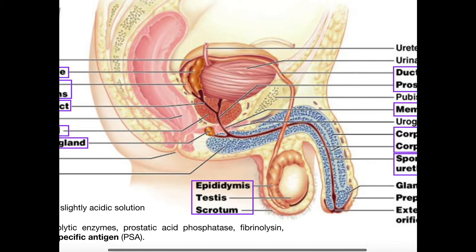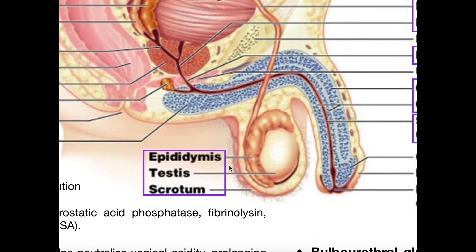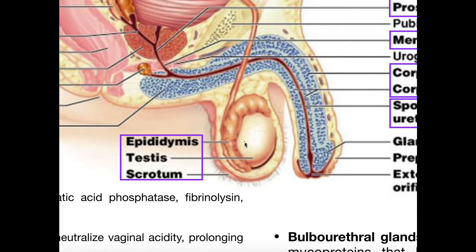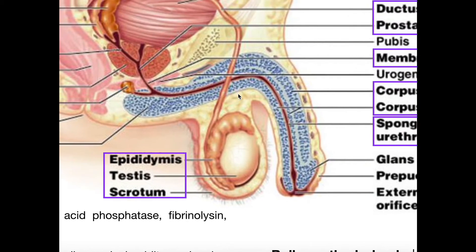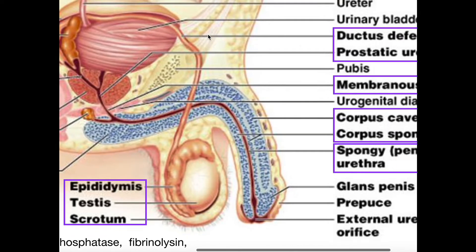So let's discuss some relevant anatomy here. This is where we left off in the previous video. Here's our scrotum — the sac that contains the testes. Here's one testis, and here's the epididymis associated with that testis. We can see that it loops around and we have the ductus deferens, labeled right here, which continues all the way up.